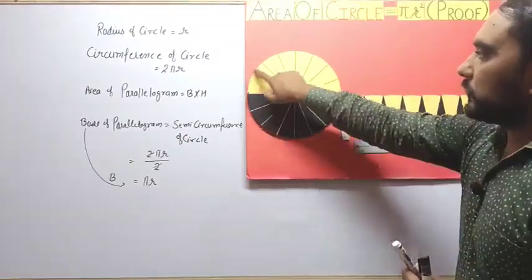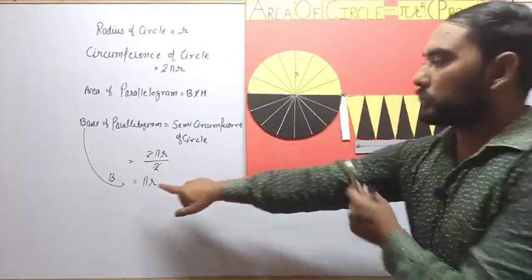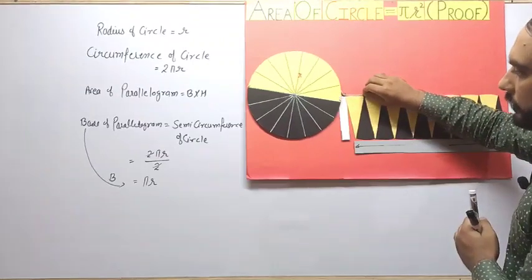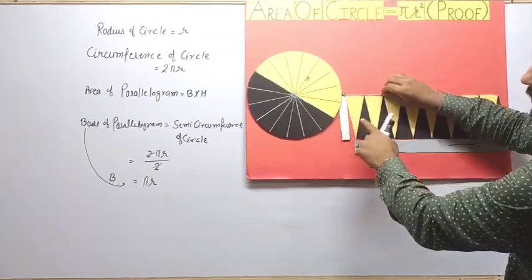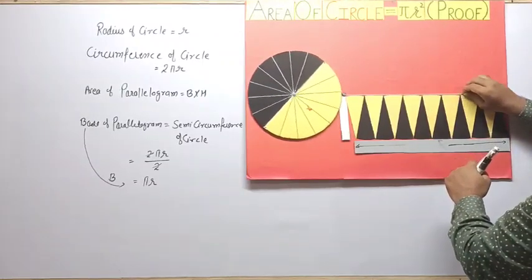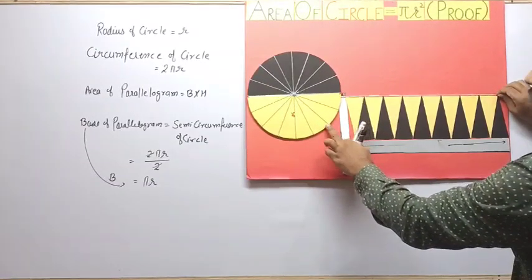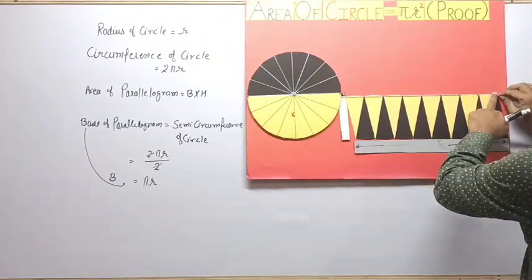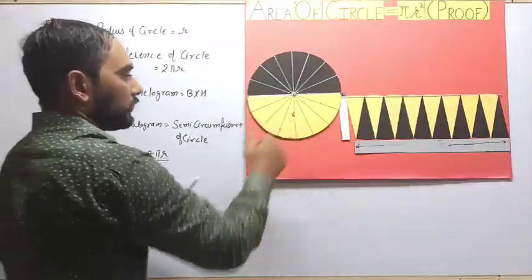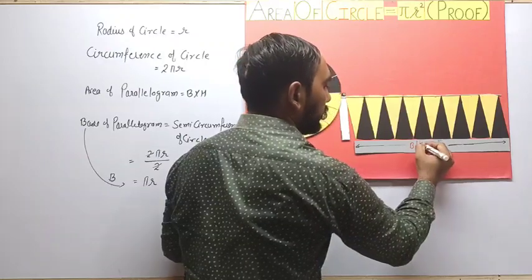All 16 triangular parts are pasted on the cardboard to make the parallelogram. A thread is tied around the semi-circle, representing the circumference of the semi-circle, which equals the base of the parallelogram. We push the thread along the circle and we can see that the thread, which represents the semi-circumference of the circle, is completely equal to the base of the parallelogram, which is pi r.